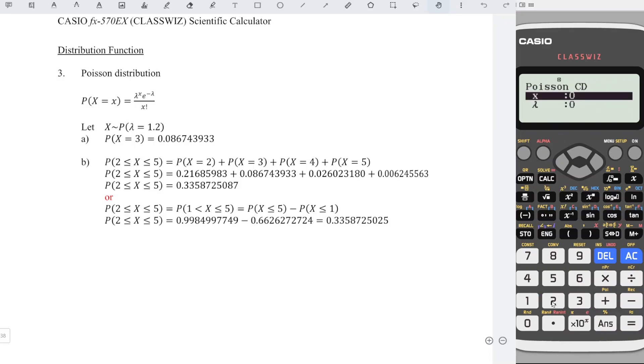We choose Poisson CD. Choose variable. X is equal to 5. Equal. Lambda 1.2. Equal. Equal. Equal. Store the value in A.